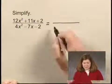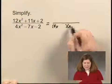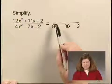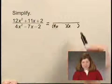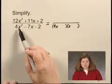The denominator factors into two factors. The first term in the factors, the first term in one factor is 4x and the other is x, and I'm going to try 4x and x first, though it could be 2x and 2x.